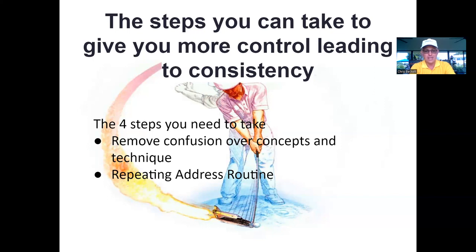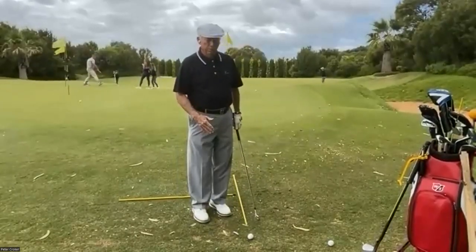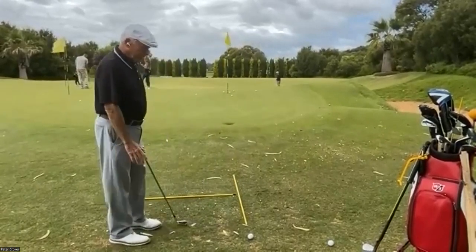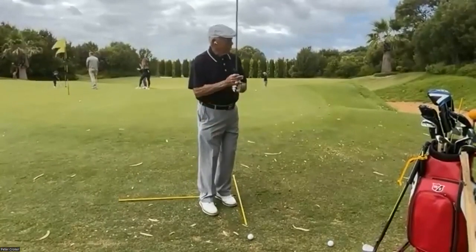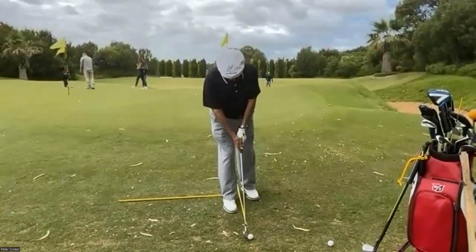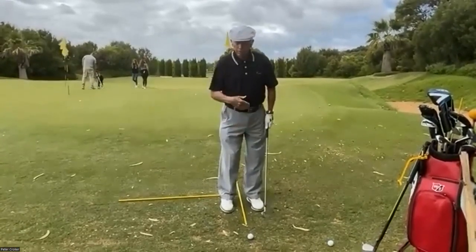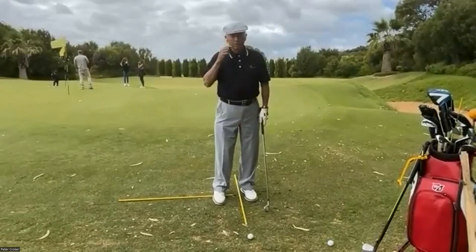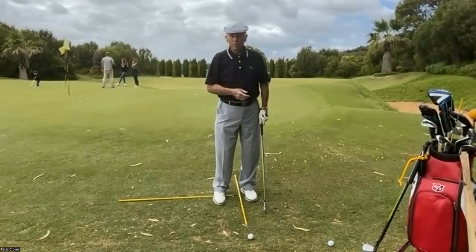The second step is to build a repeating address routine. The address routine is how you set up to the golf ball and to the ball's target. You need a reliable way of doing that. First, get your club aimed at the target, take a nice grip, then position your body in balance with the right posture, bending the right distance from the ball. That whole address routine leads into a flow. If you have doubt about how far to stand from the ball, that leads to confusion, tension, and more inconsistent results.